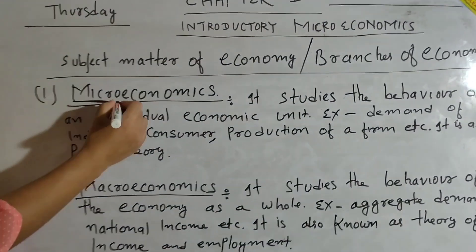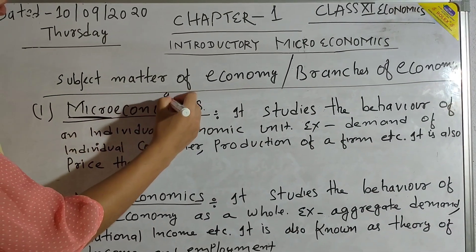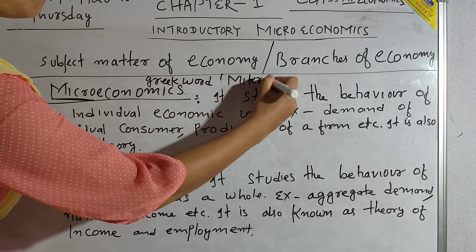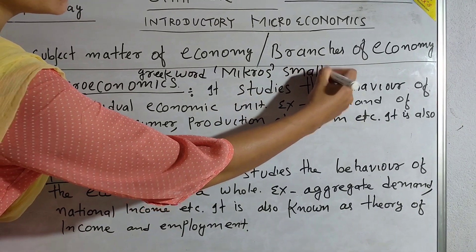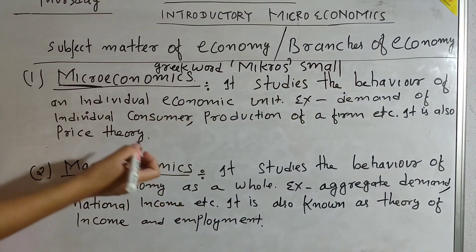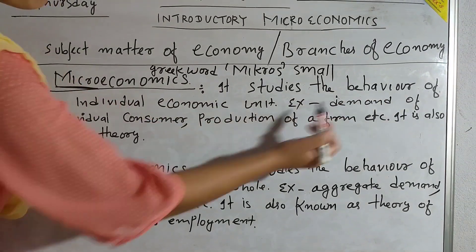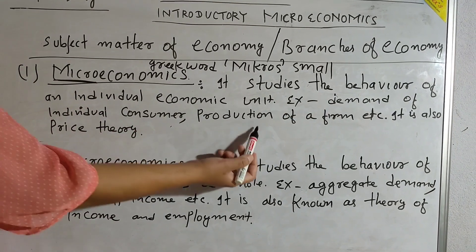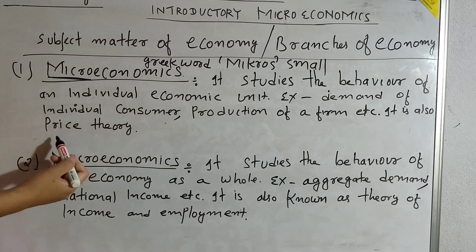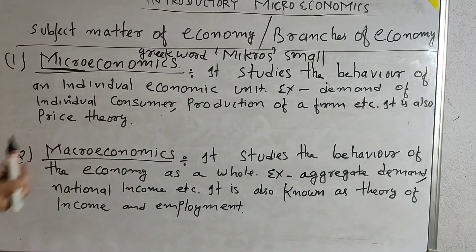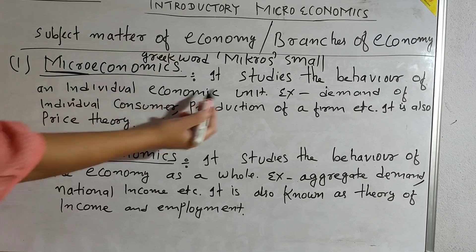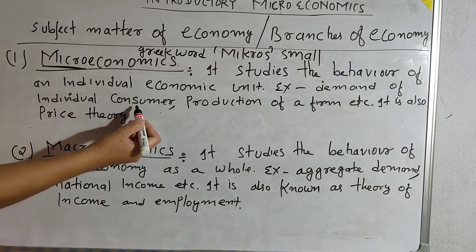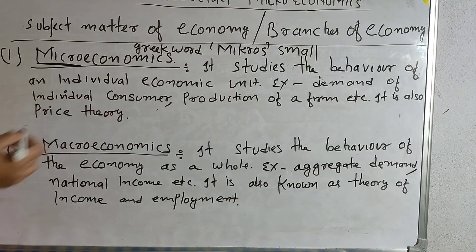The word micro is derived from the Greek word mikros, which means small. So microeconomics studies the behavior of individual economic units. For example, demand of an individual consumer, production of a firm, etc. It is also known as price theory. Since it is the small unit, microeconomics studies the behavior of individual economic units like the demand of an individual consumer.